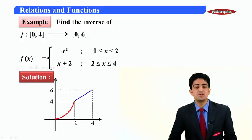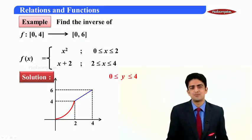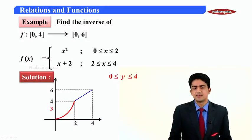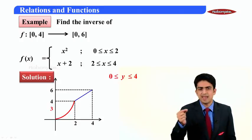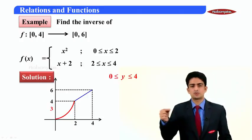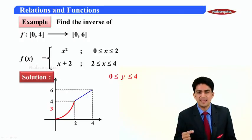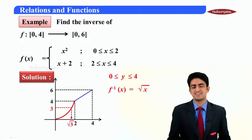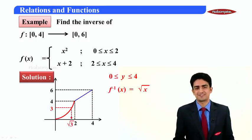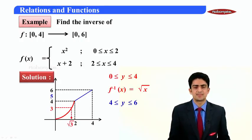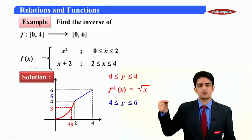Now say from 0 to 4 we take 3, there 3 will backtrack by red curve. While going it was square, so while coming back it should be square root, so f⁻¹(x) here should be √x. From 4 to 6 let us take 5, while going it was x+2.